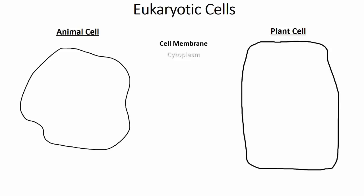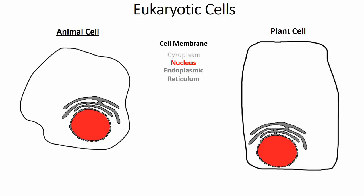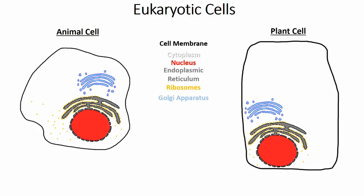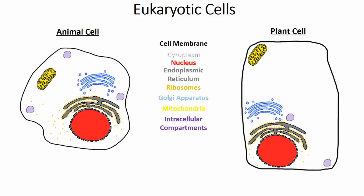These include the nucleus, where DNA is stored and maintained; the endoplasmic reticulum, ribosomes and Golgi apparatus, or Golgi body, which are involved mainly in protein synthesis and transport; mitochondria, where the majority of the cell's energy source is produced; intracellular compartments, that are responsible for the transport, storage and recycling of various molecules; and centrioles, which are primarily important in cell division.